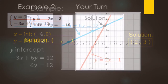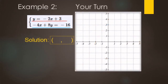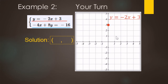Go ahead and pause the video and give this one a try, then come back. For the top equation, the y-intercept is 3 and the slope is negative 2 — so rise over run is down two, right one. There's the line for the top equation.